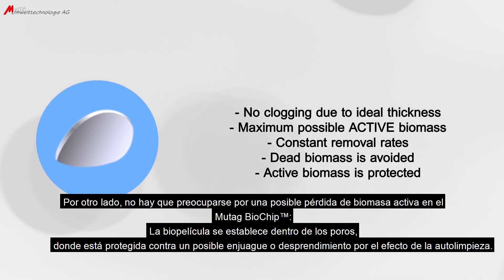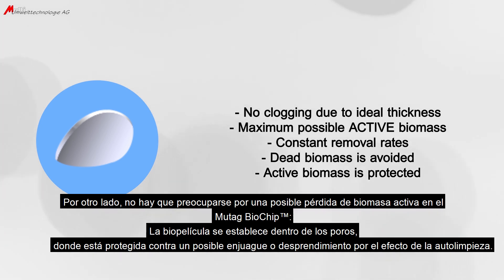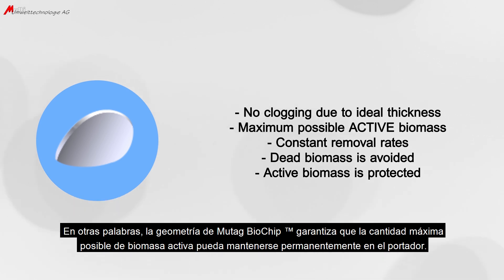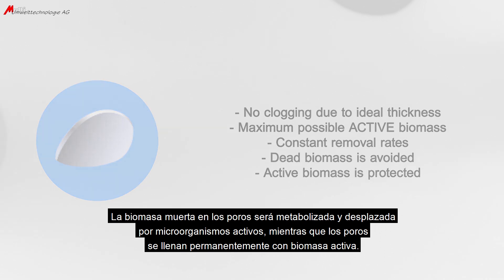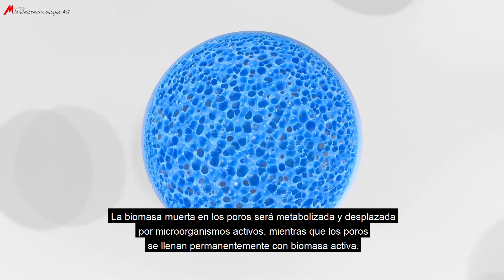There is no need to worry about a potential loss of active biomass on the Mutag Biochip. The biofilm establishes inside the pores, where it is protected against being flushed or sloughed off by the self-cleaning effect. In other words, the geometry of the Mutag Biochip ensures that the maximum possible amount of active biomass can be permanently kept on the carrier. Dead biomass in the pores will be metabolized and displaced by active microorganisms, so the pores are permanently filled with active biomass.